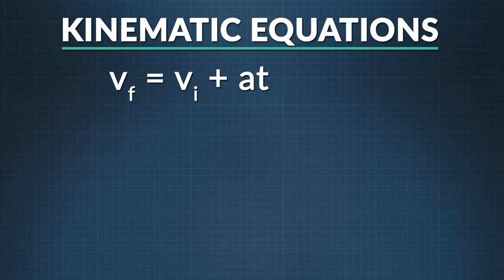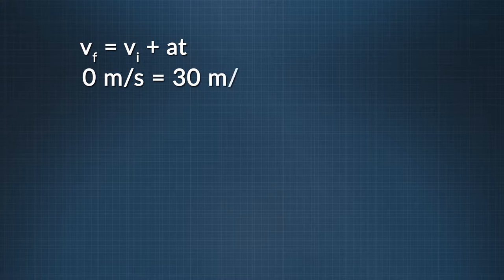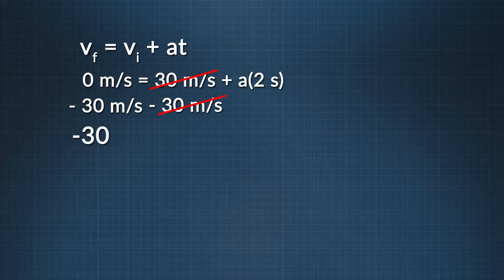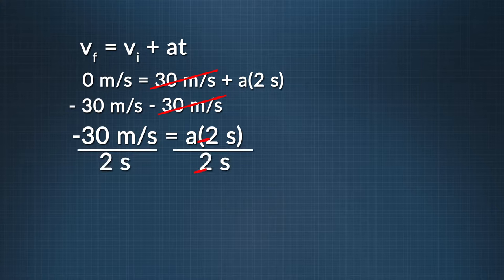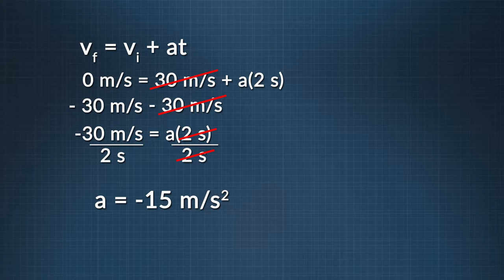Starting with the equation, we replace the variables with known values. Final velocity of zero meters per second equals initial velocity of 30 meters per second plus acceleration times two seconds. We subtract 30 meters per second from both sides, giving us negative 30 meters per second equals acceleration times two seconds. Dividing both sides by two seconds, we find our acceleration to be negative 15 meters per second squared. Because initial velocity and acceleration have opposite signs, we know our car is slowing down.